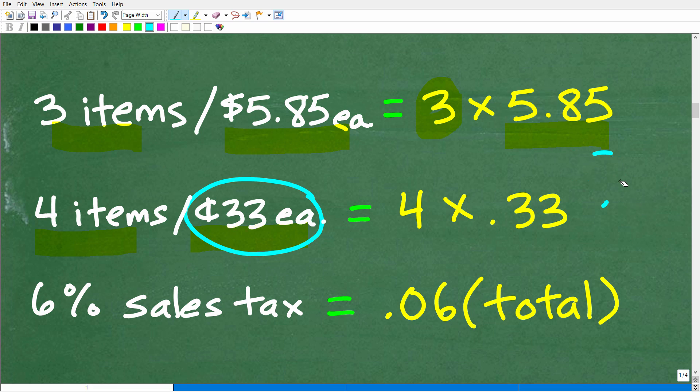So here it's not going to be four times 33. That would be $33. 33 cents is 0.33. Okay, so again, this is a perfect problem to use our calculator. And of course, we'll get to these actual calculations in a second. But let's talk about the sales tax.